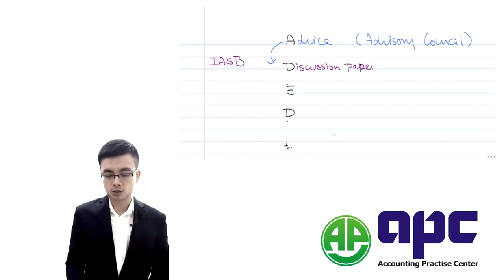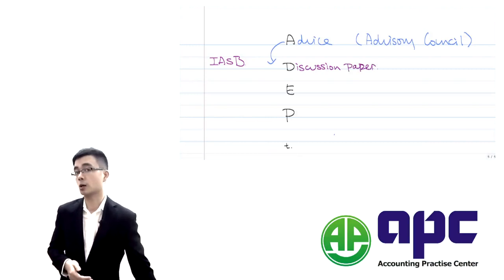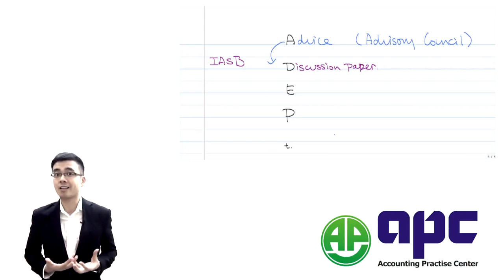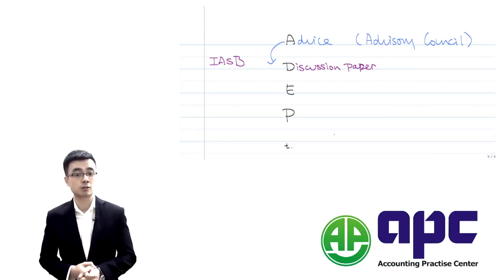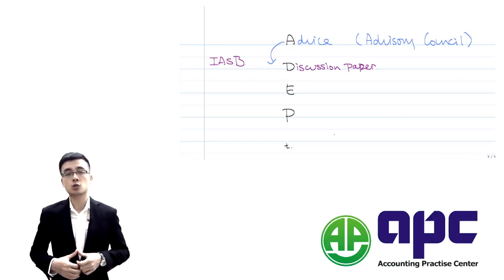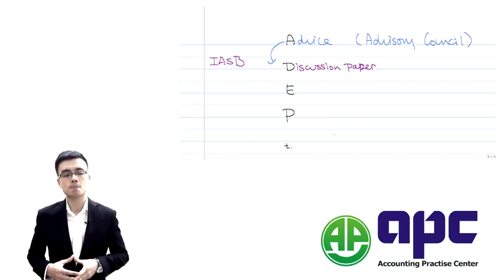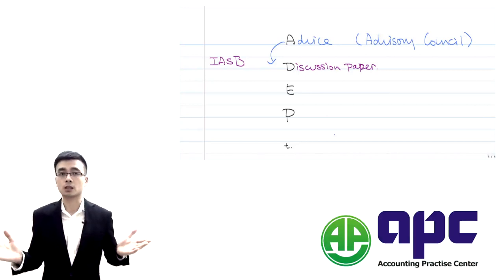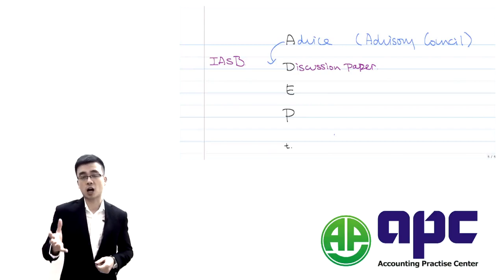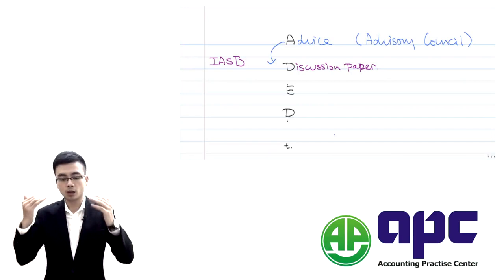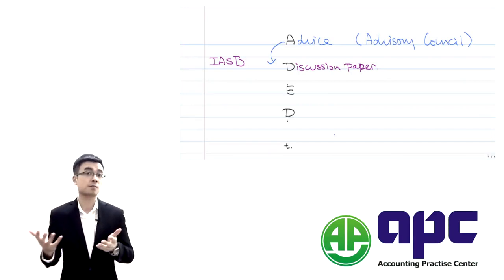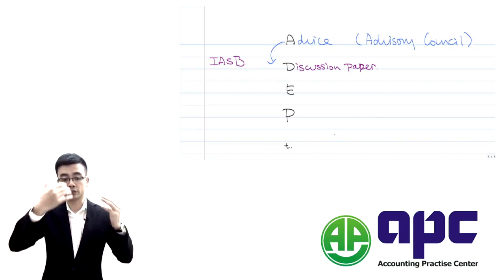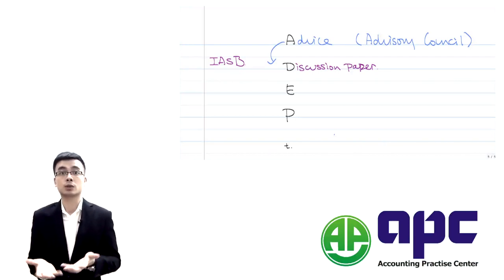The IASB would then develop a Discussion Paper. Based on comments from companies in the real world about the current IAS No. 17 Lease Accounting Standards, and through investigation finding quite a lot of off-balance-sheet transactions happening in real-life companies, the IASB publishes a Discussion Paper proposing to replace IAS 17 with the new IFRS 16, allowing the public to comment on the proposed standard.